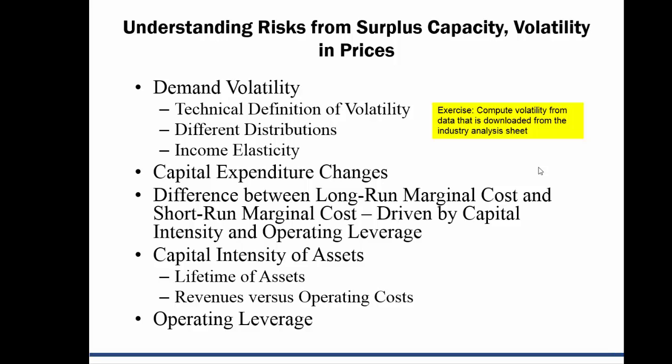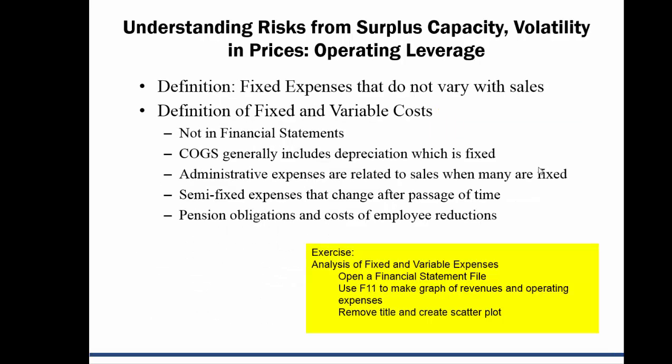The whole thing starts with demand volatility — the economy goes up and down. We need to understand what happens when we have demand volatility, because demand volatility drives price volatility, and that's the big one. On the cost side, we want to see if we have capital-intensive or operating leverage in our assets. Operating leverage means fixed expenses that don't vary when sales go up or down — you really need to understand what's fixed and variable.